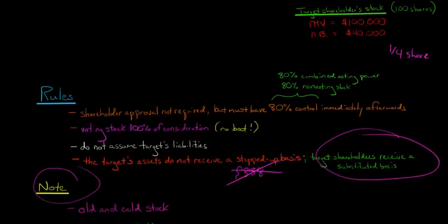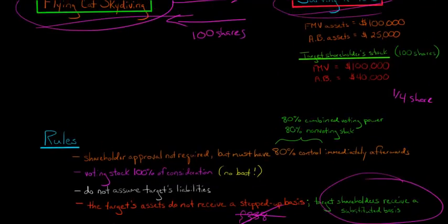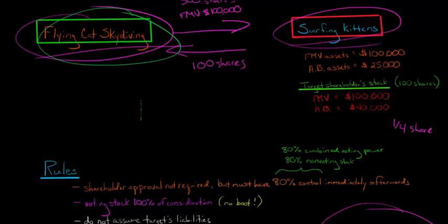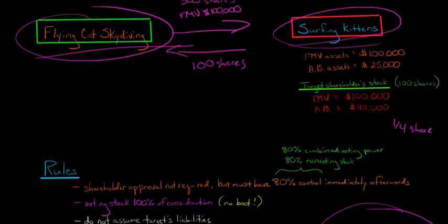Now, a few important notes. You might hear the phrase 'old and cold stock.' Here's what that means: we've established that 100% of the consideration must be voting stock and you need at least 80% control immediately afterwards. But what if Flying Cat Skydiving had previously acquired, say, 10% of Surfing Kittens with cash — let's say nine years ago?